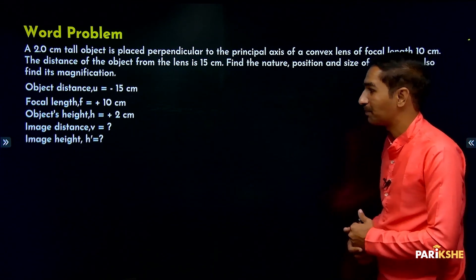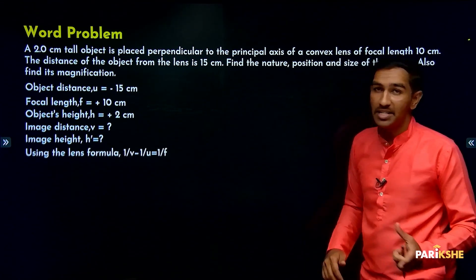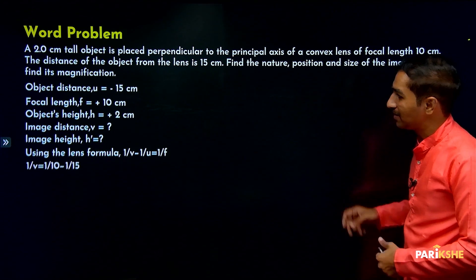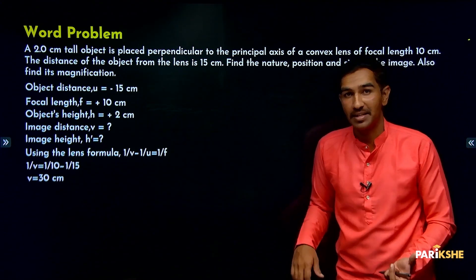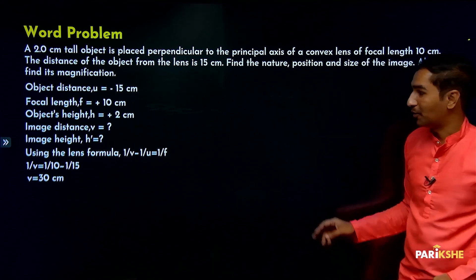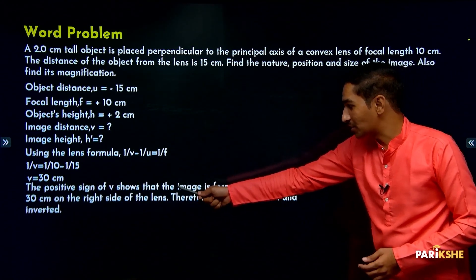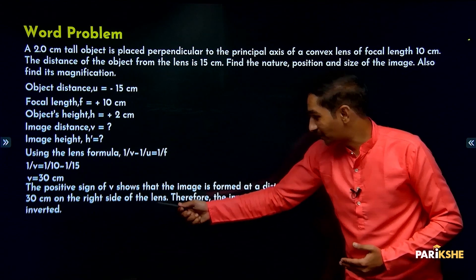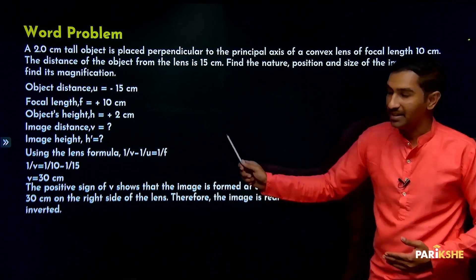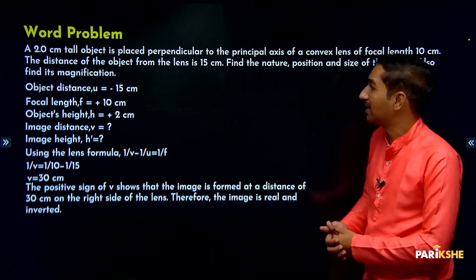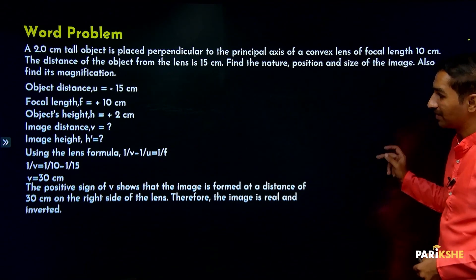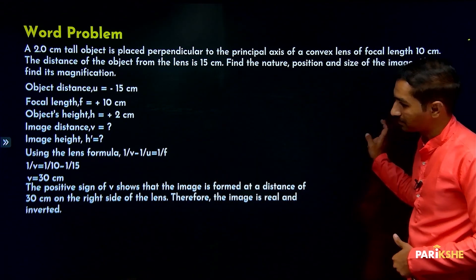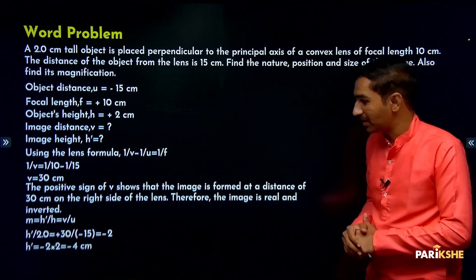We need to find image distance v and image height h-dash. Using lens formula: 1/v minus 1/u equals 1/f. Substituting and solving, v equals plus 30 centimeters. The positive sign of v shows that the image is formed at a distance of 30 centimeters on the right side of the lens. Therefore the image is real and inverted. Next we find magnification: m equals h-dash by h, which equals v by u.